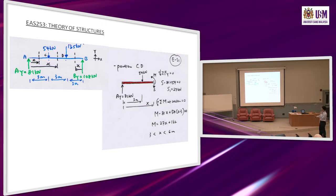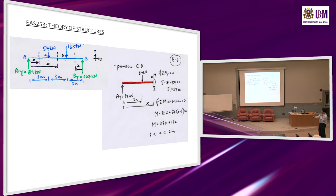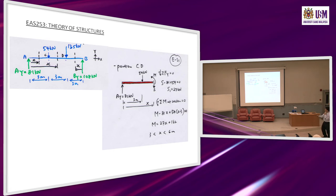For the third cut (DB portion), you may use the free body diagram on the right hand side since it has fewer forces. The positive direction now changes: shear force is upward and bending moment is clockwise. Applying equilibrium: shear force S = −108 (constant, negative). Taking moment at the cut section gives bending moment M = 108X. Here X is measured from B.